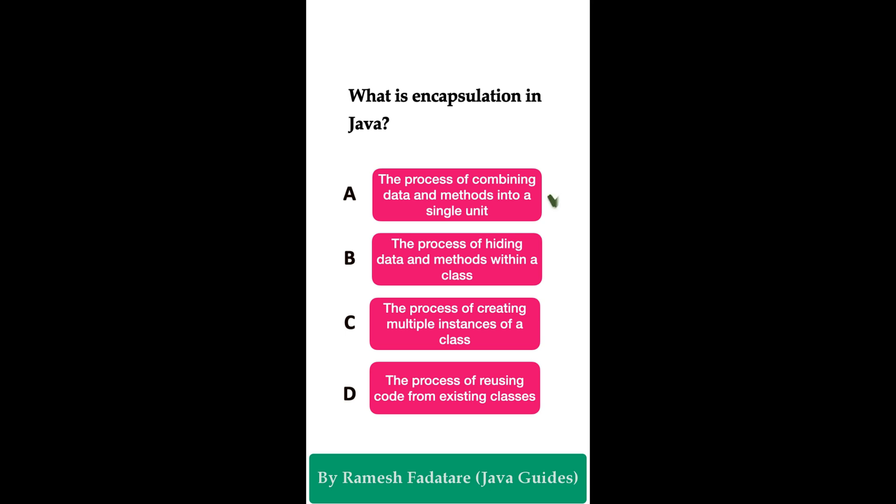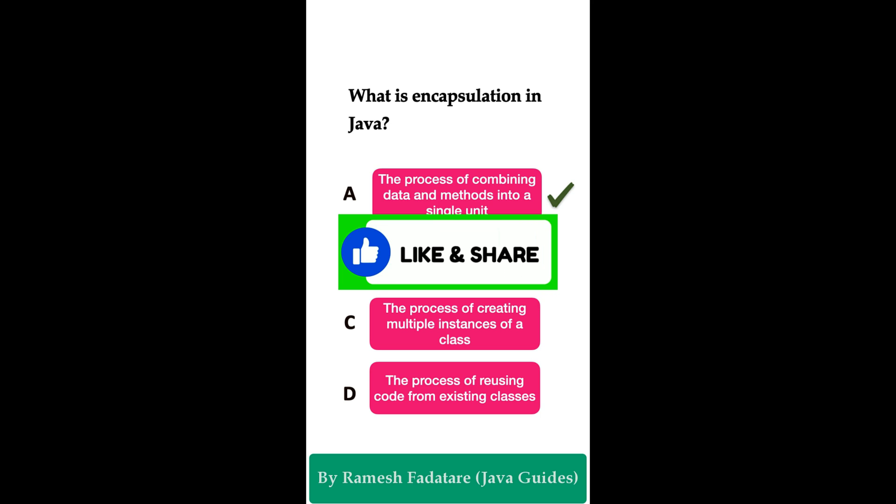The correct answer is option A: the process of combining data and methods into a single unit. Encapsulation is one of the four fundamental object-oriented programming concepts. The main idea behind encapsulation is to bind together the data and the methods that operate on that data into a single unit, or class.